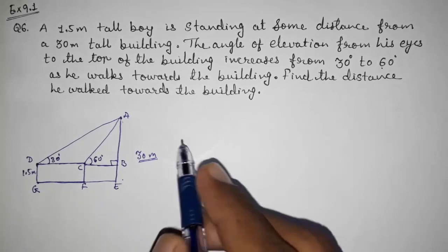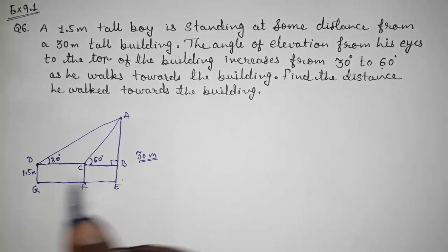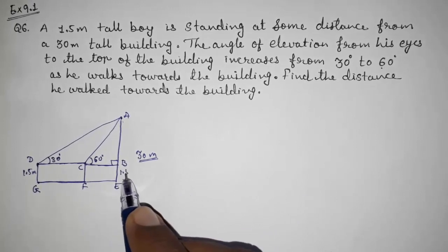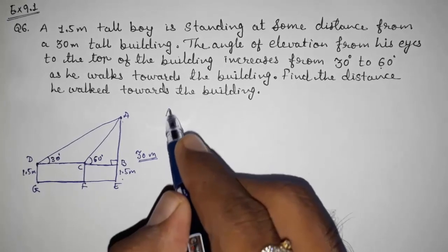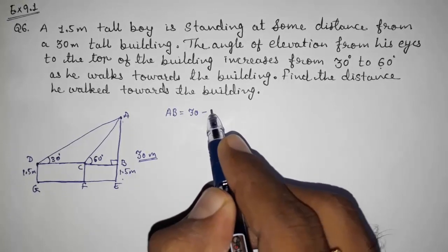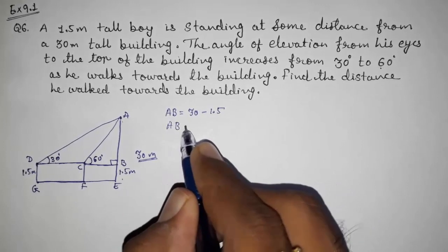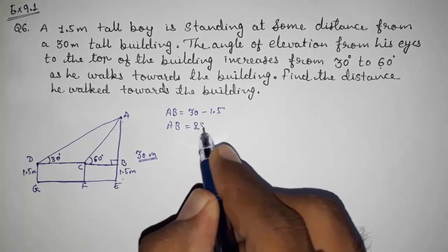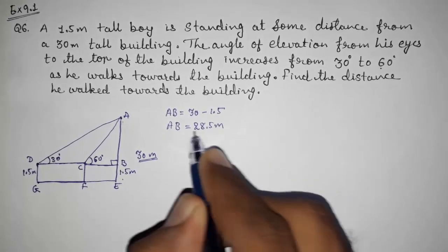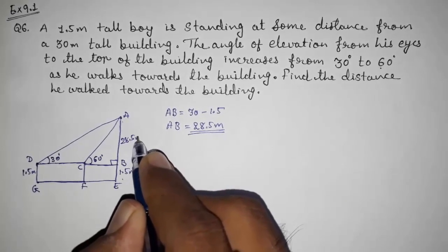So we want AB. For finding AB, what we have to do? We have to subtract this BD. This B will be also 1.5 meter. So AB equals 30 minus 1.5, therefore AB will be equals to 28.5 meters.